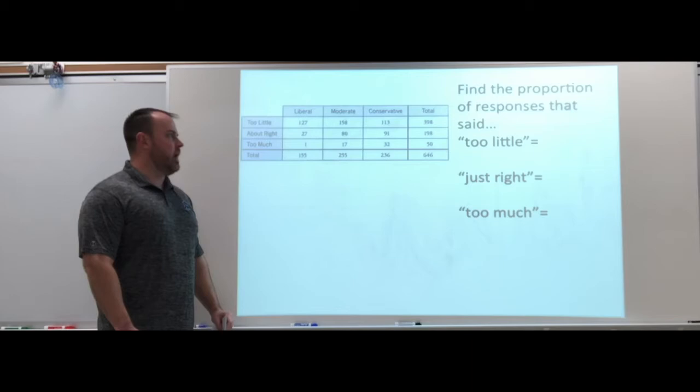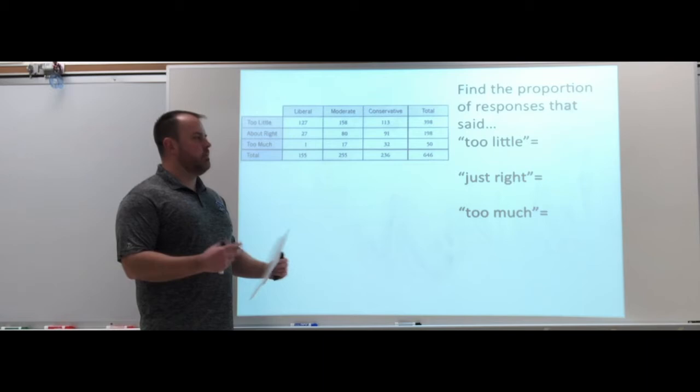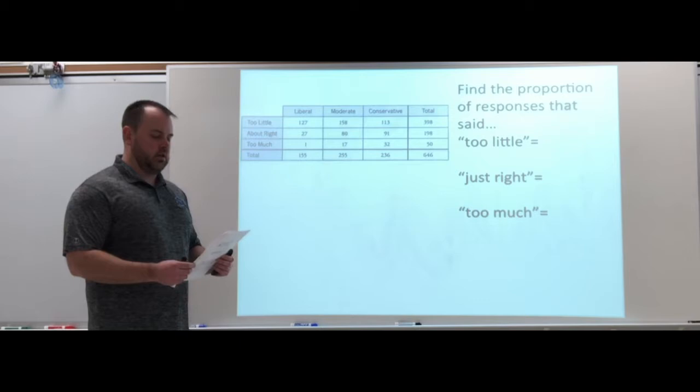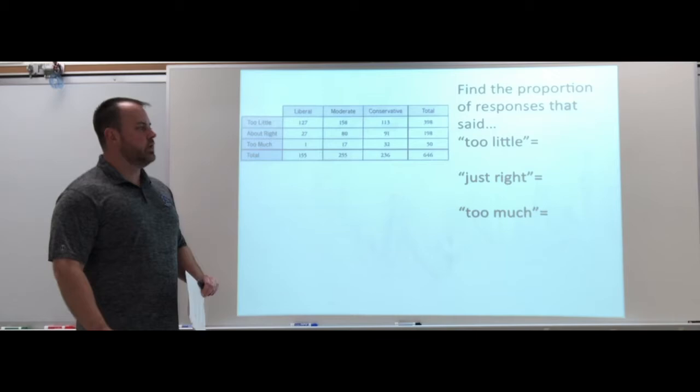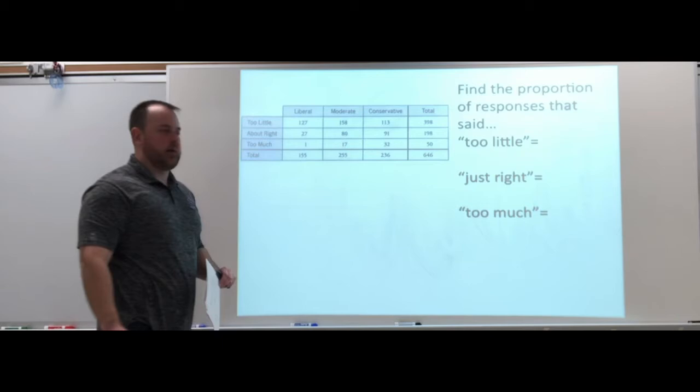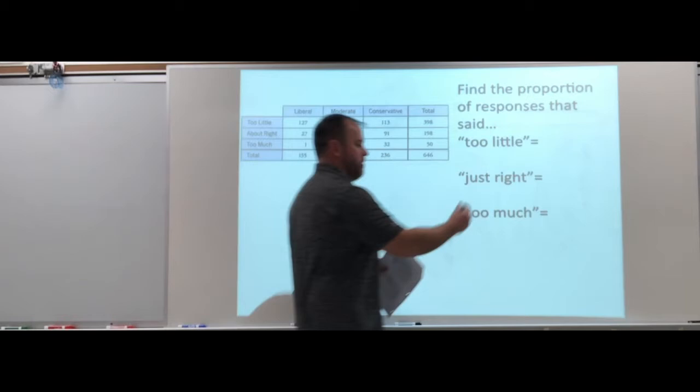A couple things you can do here. Looking at proportions can help. Just looking at the counts, you might think that they're even or that one is bigger than another. Looking at the percentage can be helpful. So what I'm looking at here is find the proportion of responses that said too little, just right, and too much. I'm looking at each row and finding that proportion, dividing by my grand total.